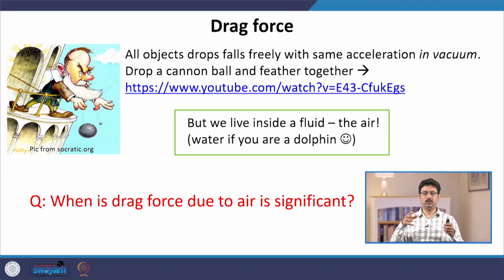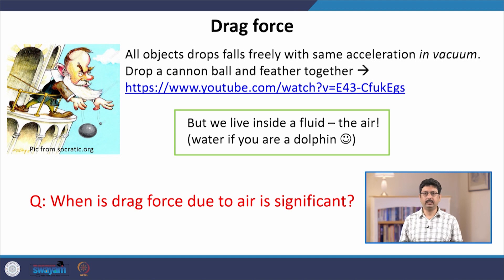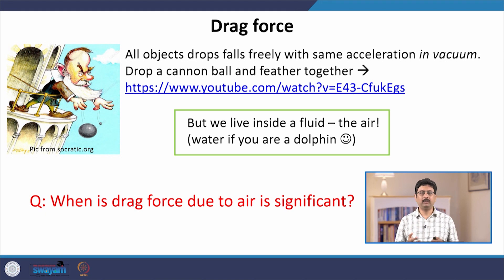Let us start with a story. You might have heard about the famous physicist Galileo, who performed an experiment where he dropped two cannonballs from the Leaning Tower of Pisa — one big, one small — to show that they both have the same acceleration. It is not clear whether this experiment ever actually happened; most probably, no.